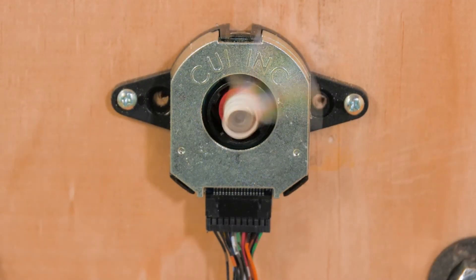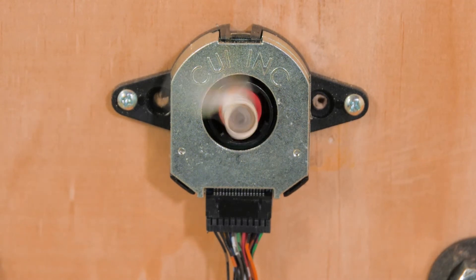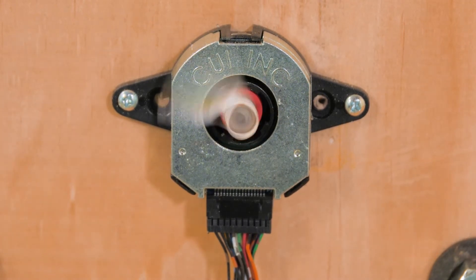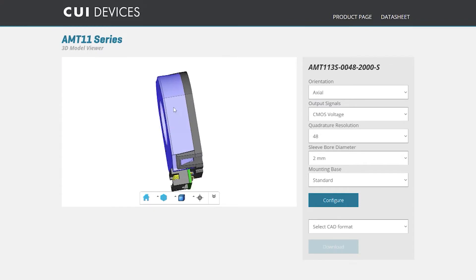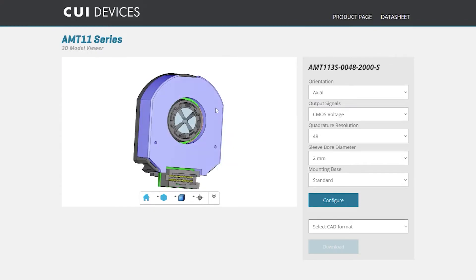Capacitive technology gives high accuracy and immunity to dirt, dust, and oil that can plague optical encoders in industrial environments. CUI Devices makes absolute encoders, commutation encoders, and incremental encoders like the ones we have here.